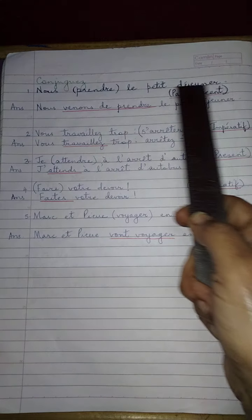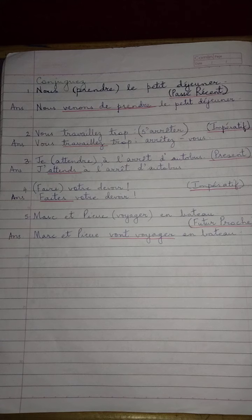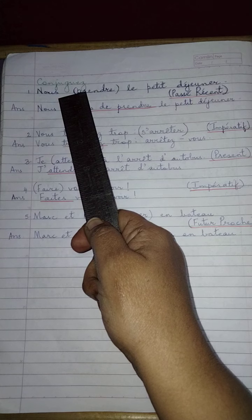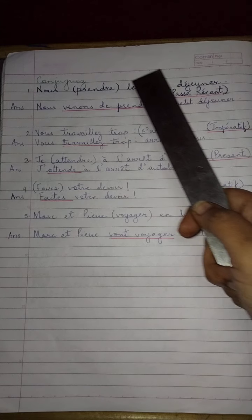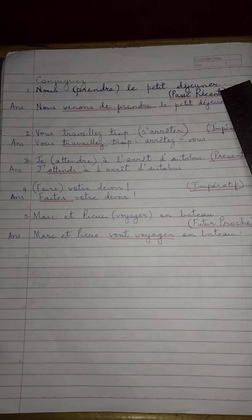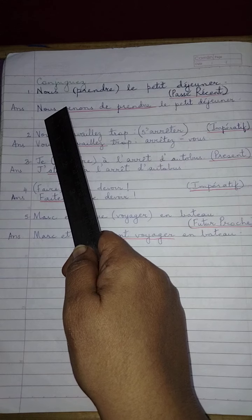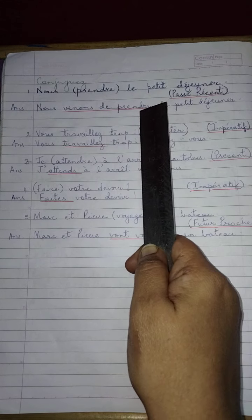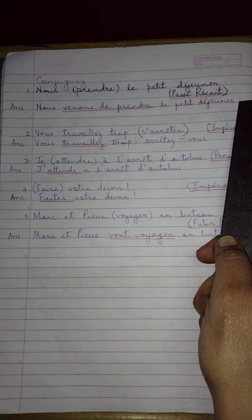First: nous [prendre] le petit déjeuner — we have our breakfast. Now, what is the tense that they expect you to put 'prendre' in? You are expected to conjugate 'prendre' in the passé récent. Let us look at the answer: Nous venons de prendre le petit déjeuner.